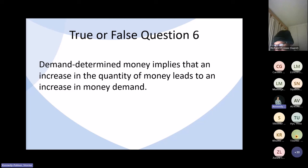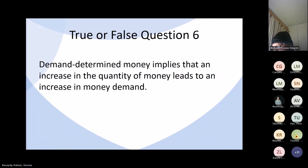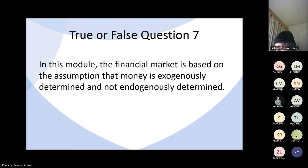Question six: demand determined money implies that an increase in the quantity of money leads to an increase in money demand. Thinking back to our chain of events, an increase in MD leads to an increase in M — not the other way around. This statement reverses the causality, meaning the statement is false.